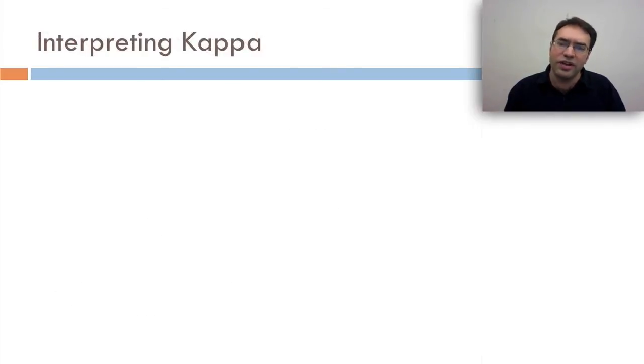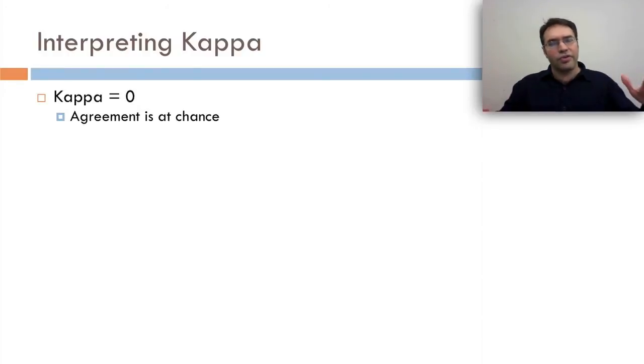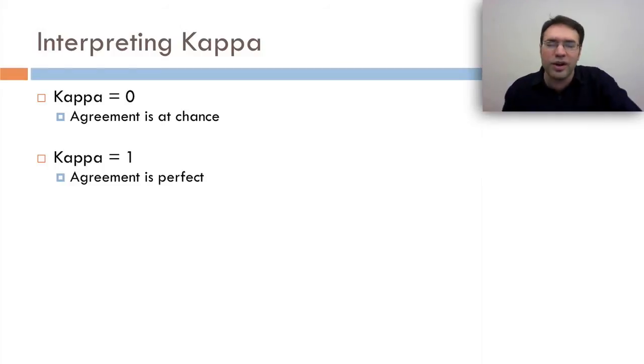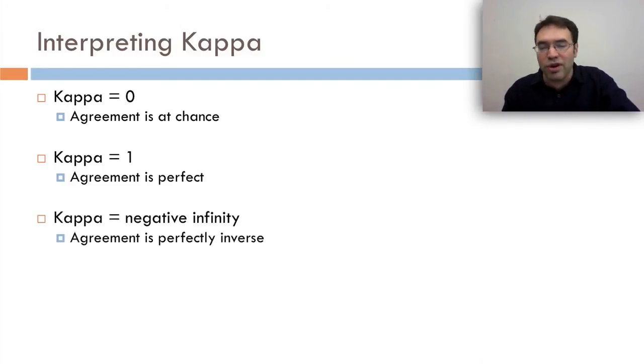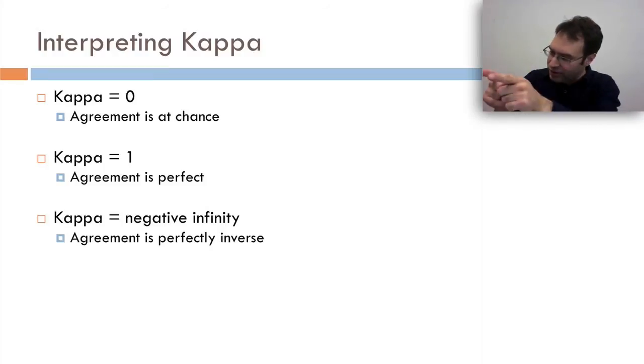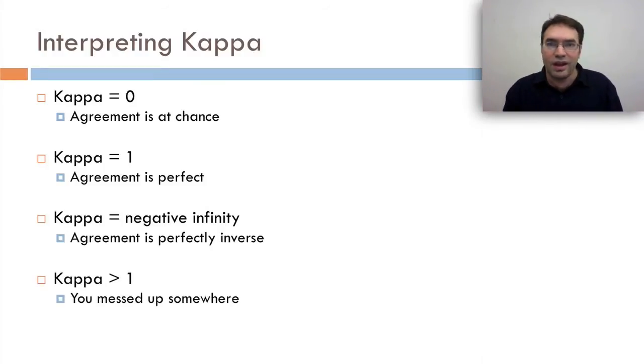Well, interpreting kappa turns out to not entirely be trivial. It's easy if kappa is zero. Agreements at chance, expected frequency. Kappa equals zero, not good. Kappa equals one. Your agreement's perfect. Hey, how can you do better than perfect? Kappa equals negative infinity. I hope you don't ever see this. Agreement is perfectly inverse. Every time the data says off task, the detector says on task. And every time the detector says on task, the data says off task. Kappa greater than one. You screwed up. Try to figure out what you did wrong. Maybe there's something wrong with your Excel sheet.